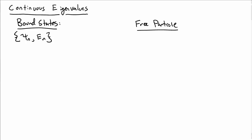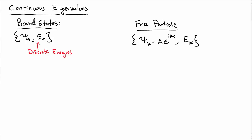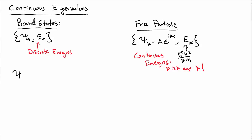Let's discuss how to understand systems with continuous eigenvalues in Dirac notation. For bound states, we have a set of stationary states with discrete energies. For the free particle, we had a set of eigenstates which look like ae to the ikx, with energies h-bar squared k squared over 2m. These were continuous energies — you could choose any k value, so you have a continuous range of energies.